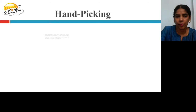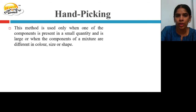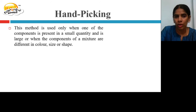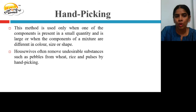Hand-picking is used only when one component is present in small quantity and is large in size, or when the components are of different color, size, or shape. Hand-picking depends on the shape, color, size, and quantity of one component. Housewives often remove undesirable substances such as pebbles from wheat, rice, and pulses by hand-picking.